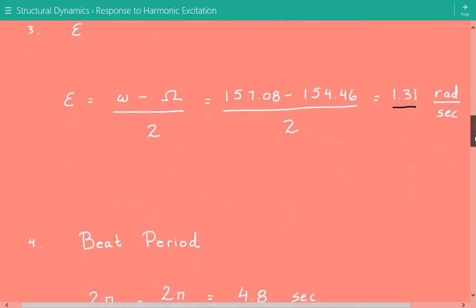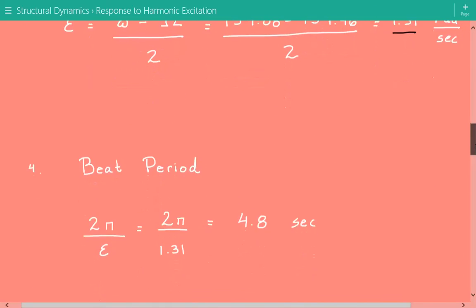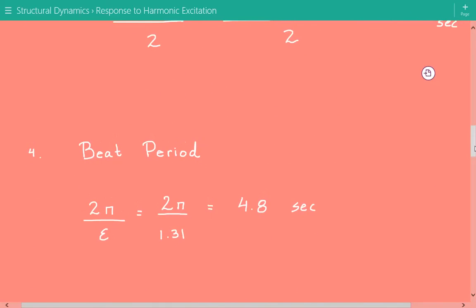Once we have epsilon, we can calculate the beat period. And the beat period is equal to 2π divided by epsilon. So 2π divided by 1.31, and that comes out to be 4.8 seconds. This is our beating period.